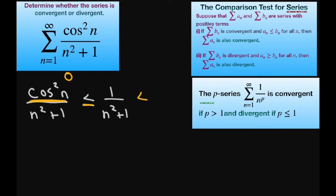And then I can look at this and say that 1 divided by n squared plus 1 is less than 1 divided by n squared. So that's because this denominator is bigger than this denominator. So that means our series converges.